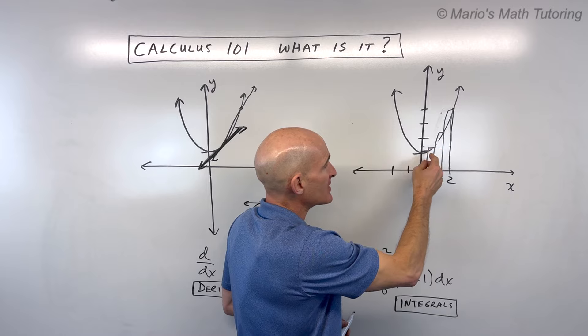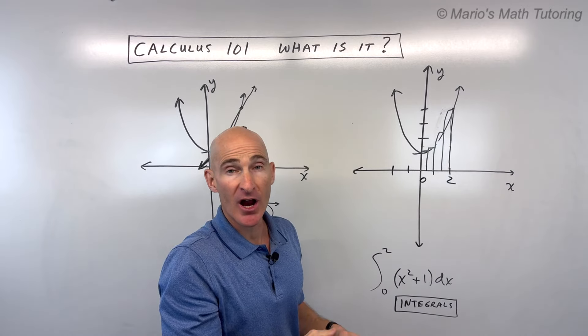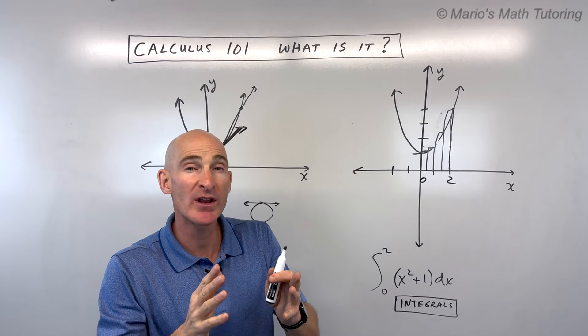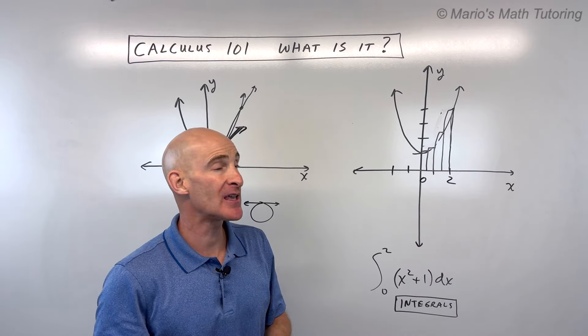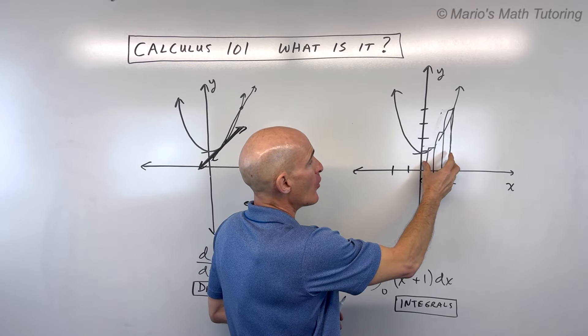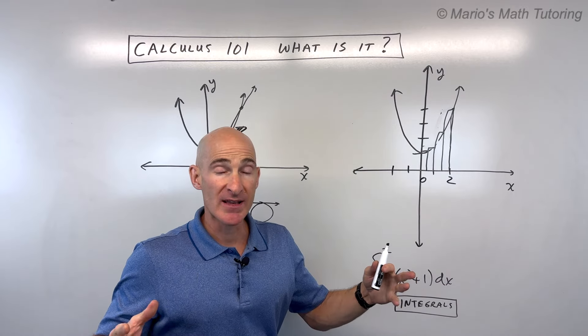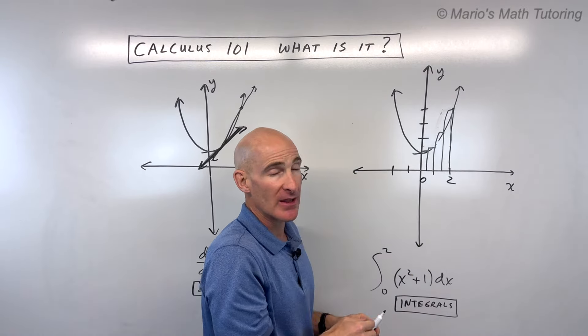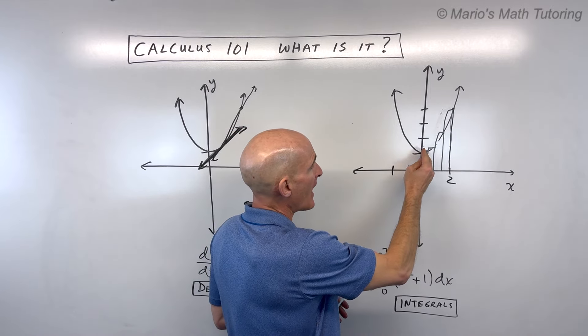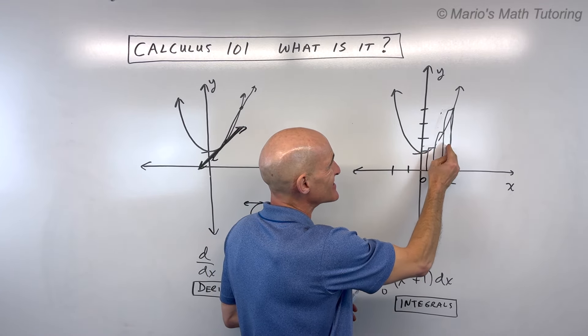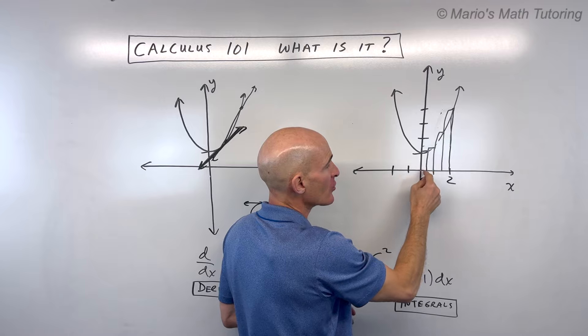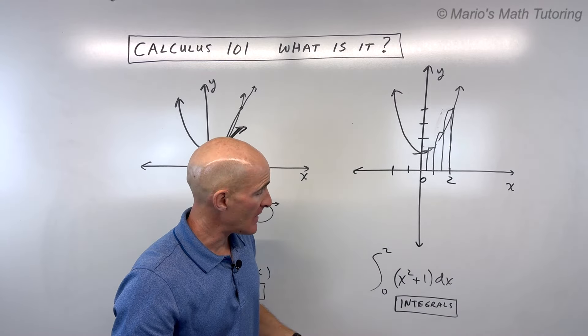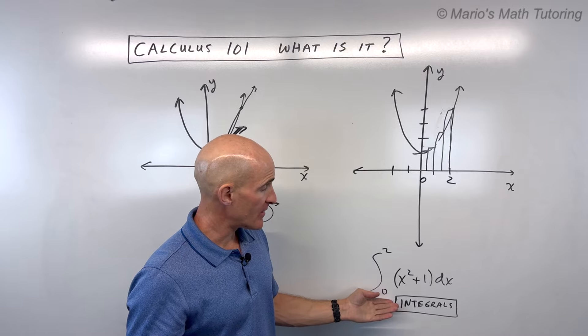But what happens if we maybe made eight rectangles and made them even thinner, and maybe like a hundred rectangles? And what would happen as the limit of those rectangles went to infinity? So again, talking about limits, we're approaching infinity. But what happens is those rectangles get very, very thin, like paper thin. And so what would happen is we would actually end up getting the exact area underneath this curve between the x-axis and below that curve between zero and two.